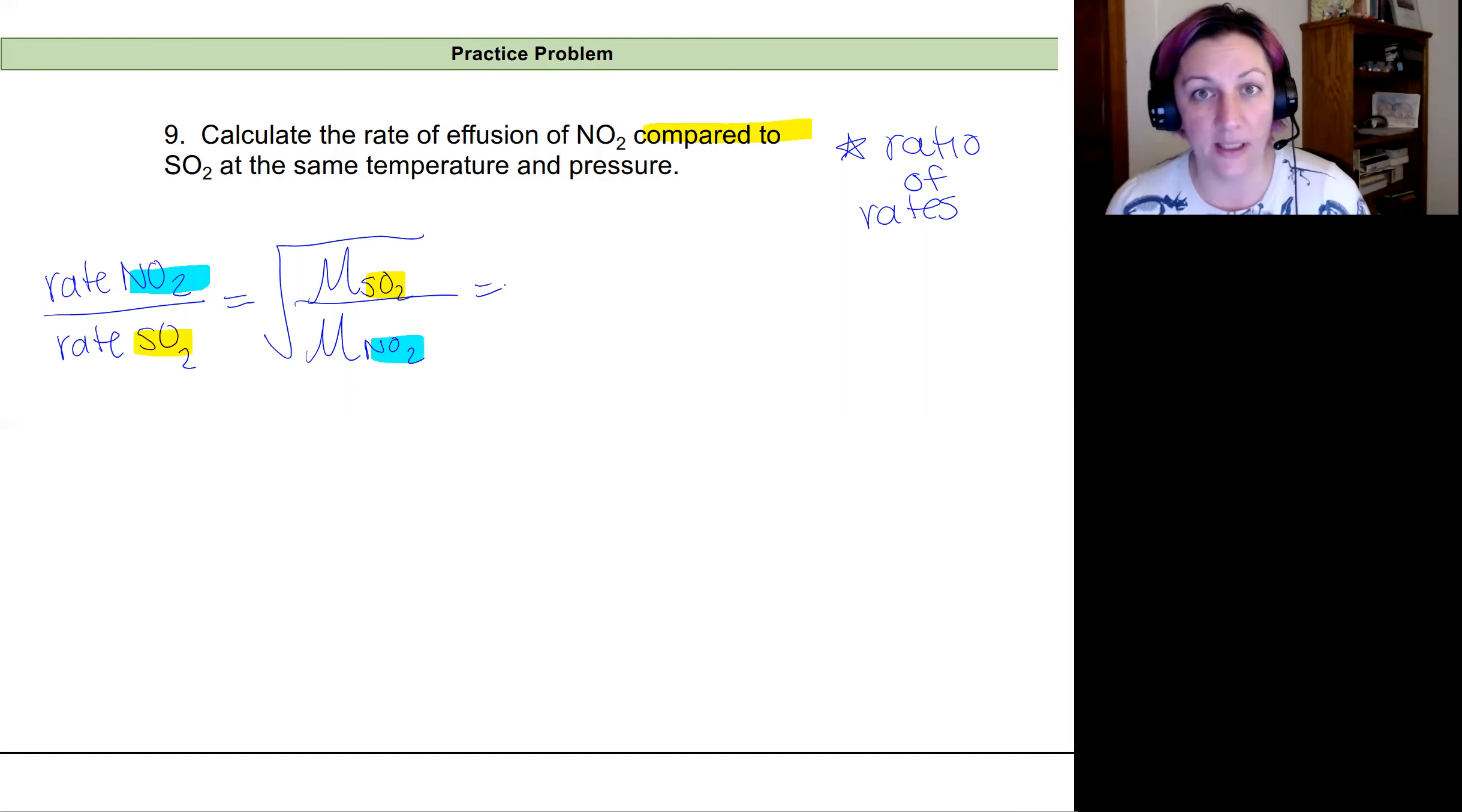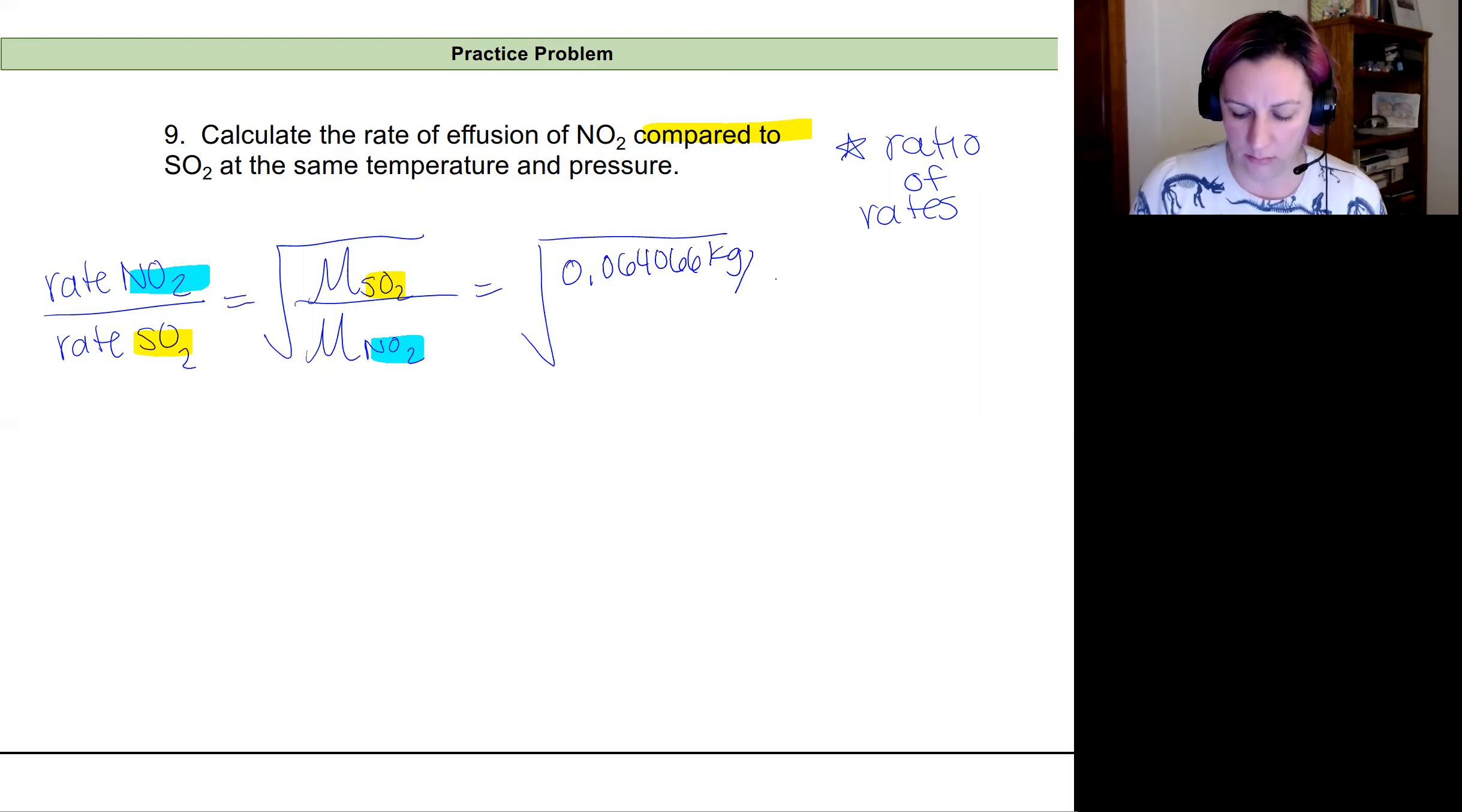So calculating this, I'm going to calculate my molar mass like you do off the periodic table and convert from grams to kilograms, which makes it just move the decimal place over three places. So this is going to be equal to the square root of 0.064066 kilograms per mole divided by 0.046005 kilograms per mole. And that's going to give me the ratio between the two and it's 1.18.